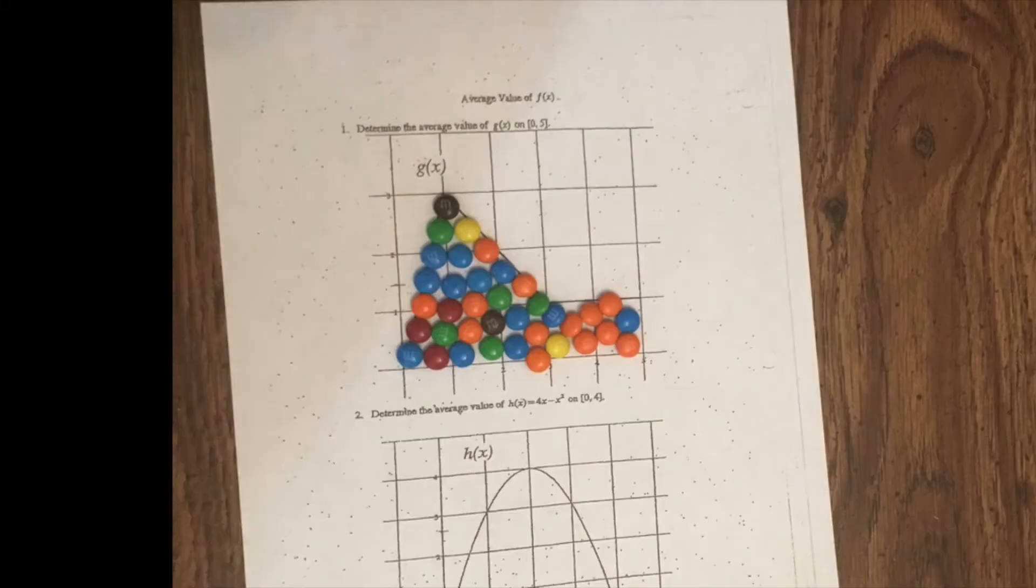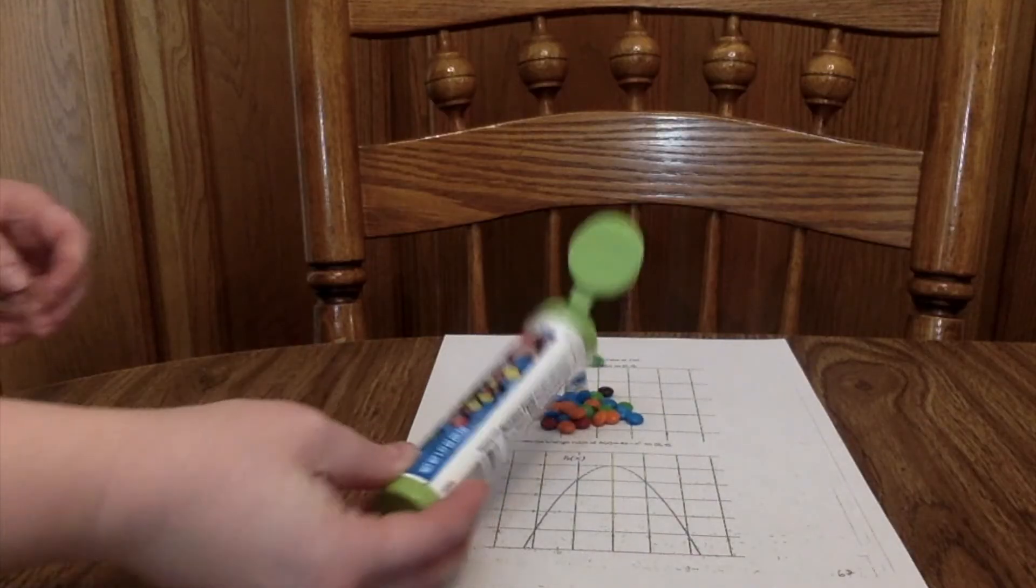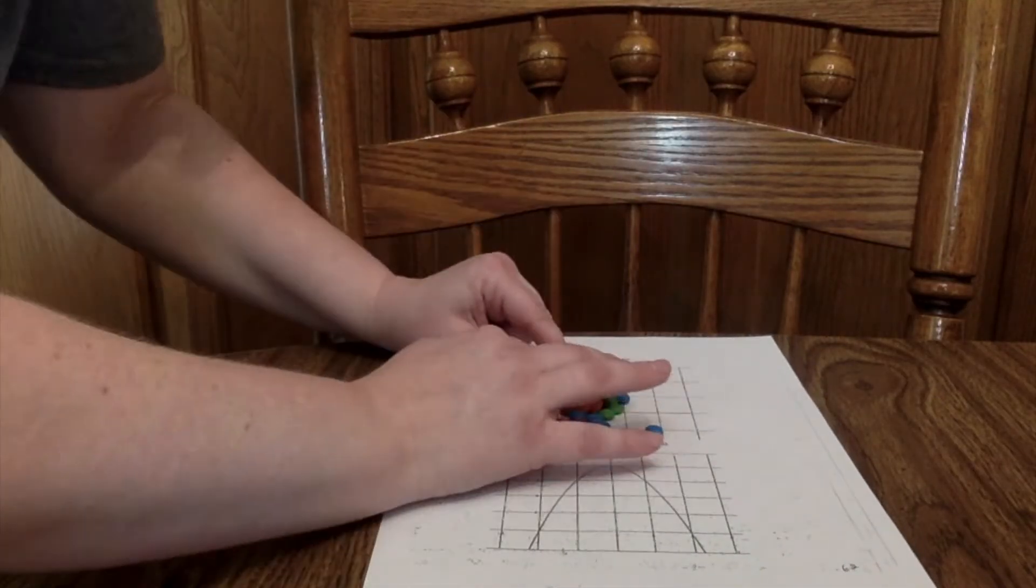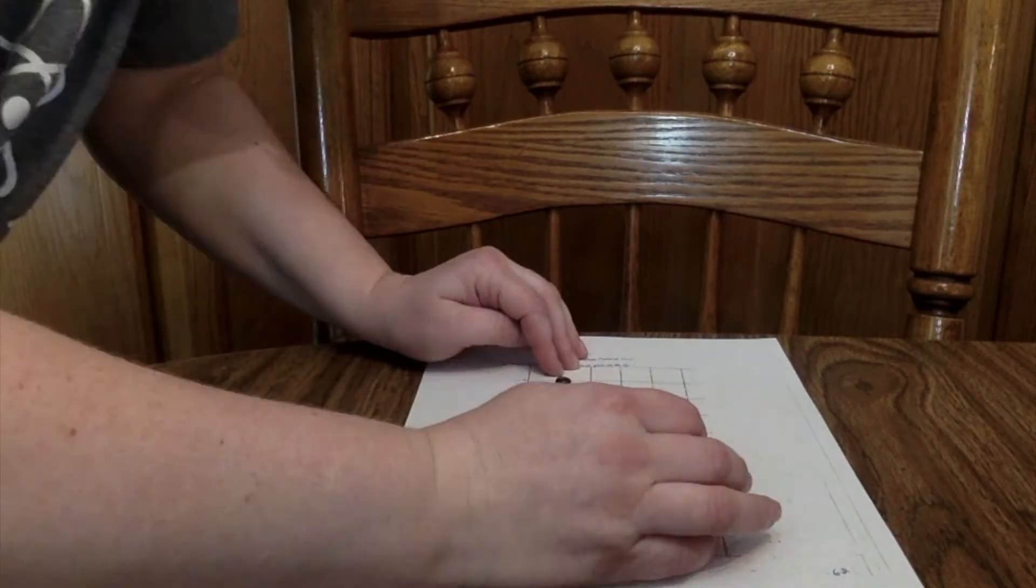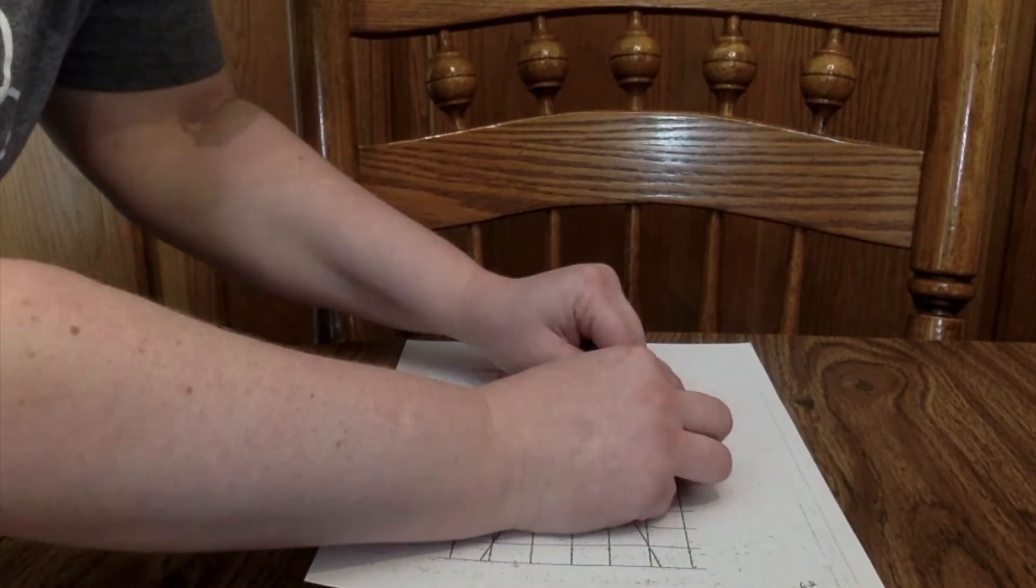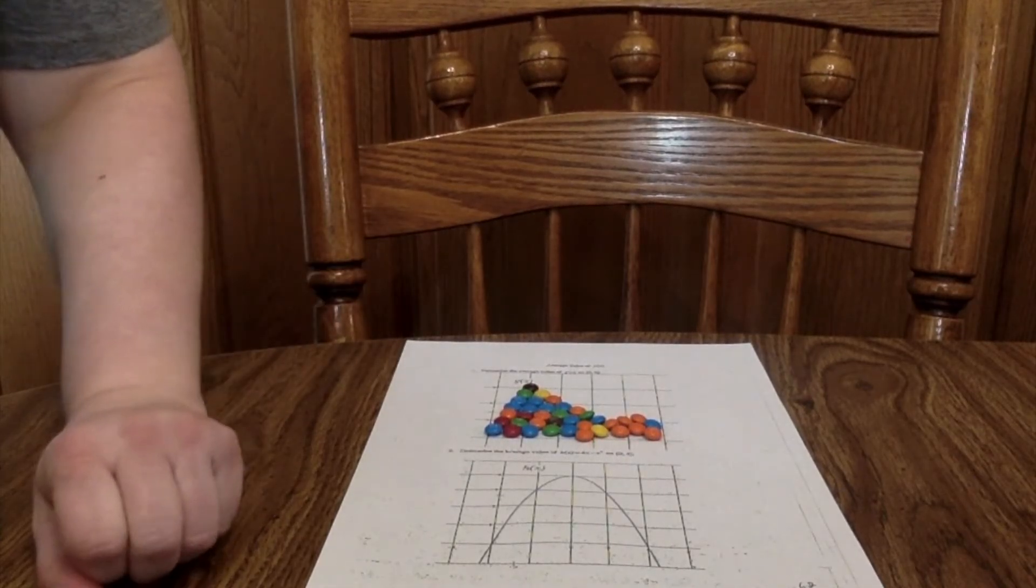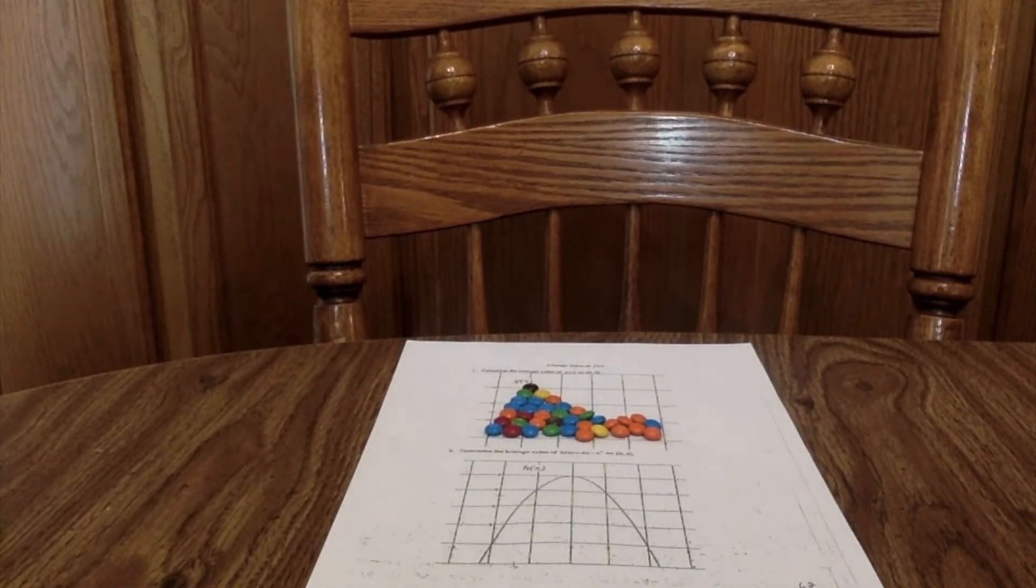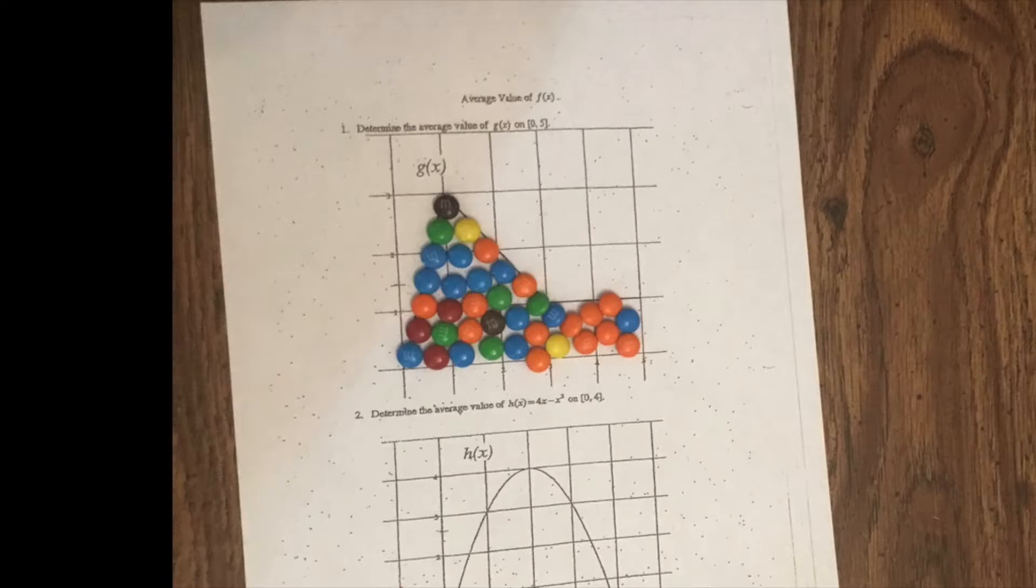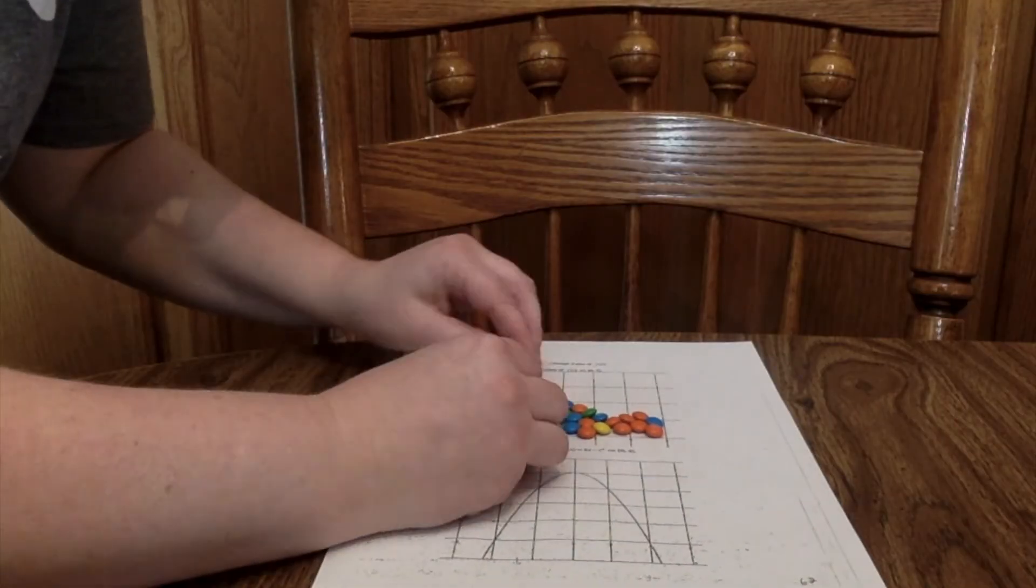So we're going to do some conceptual understanding here. The definite integral does find the area. So I'm going to take all these mini M&Ms and fill up just the part that's under the curve. Now we're going to take that particular number, in this case, the number of M&Ms, and we're going to spread them out equally over that particular interval.